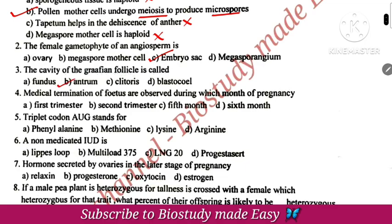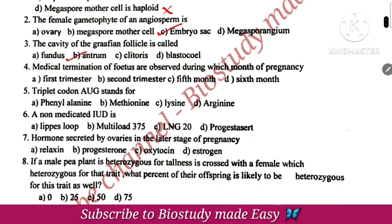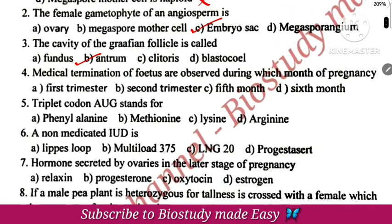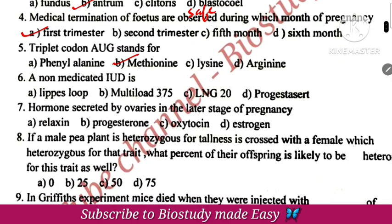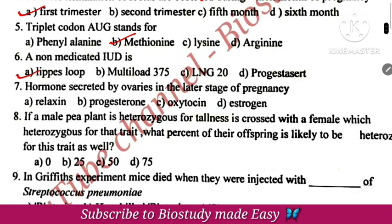Cavity of Graafian follicle is antrum. Medical termination of fetus — it is safe in the first trimester. Triplet codon AUG codes for methionine. Non-medicated IUD: Lippes loop. Hormone secreted by ovaries in the later stage of pregnancy is relaxin.